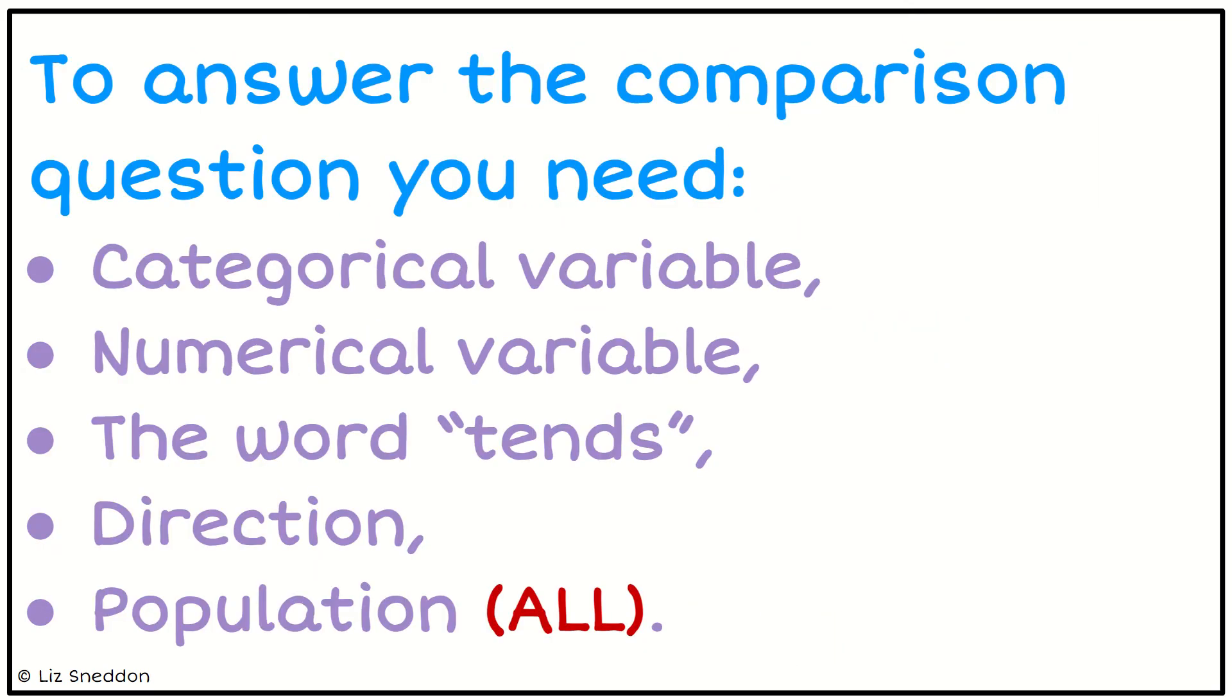To answer our question, these are different things that we need. We need categorical and numeric variables, the word tends, the direction, and the population. You'll have your investigation question, so you can use that as a basis to help you get the wording right.